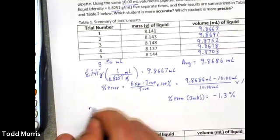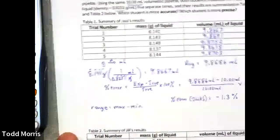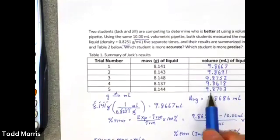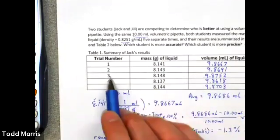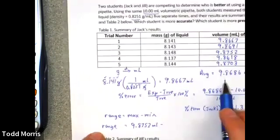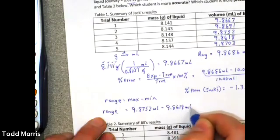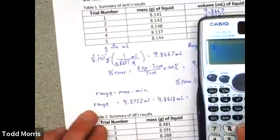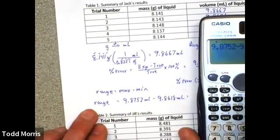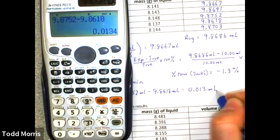For precision, we can use a variety of statistics, but for our course, we simply use range, which is the difference between the maximum number and the minimum number, the largest number and the smallest number. So, the range of Jack's data is the largest number, which in this case was trial 3, 9.8752, minus his smallest number, which was trial 4, 9.8618. That range for Jack then is about 0.013 milliliters. And that's going to be an indication of how precise Jack was.